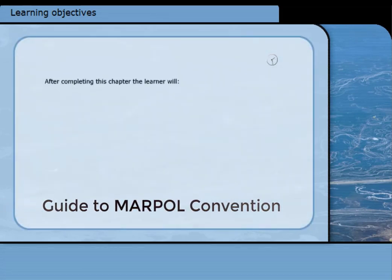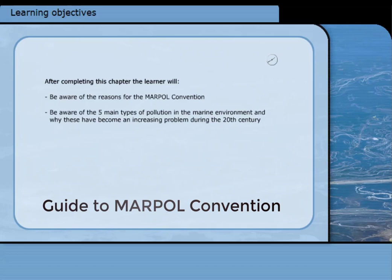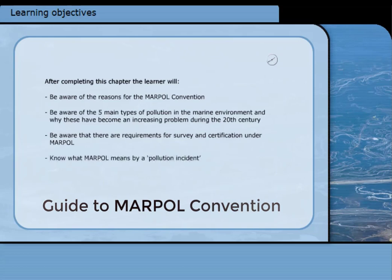After completing this chapter, the learner will be aware of the reasons for the MARPOL convention, be aware of the five main types of pollution in the marine environment and why these have become an increasing problem during the 20th century, be aware that there are requirements for survey and certification under MARPOL, know what MARPOL means by a pollution incident, and be aware of the requirements to report pollution incidents.